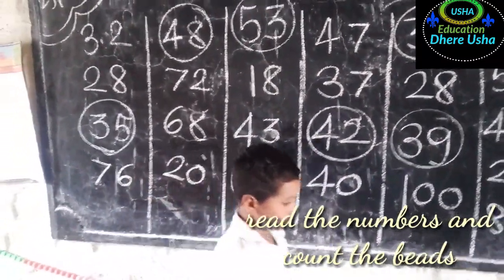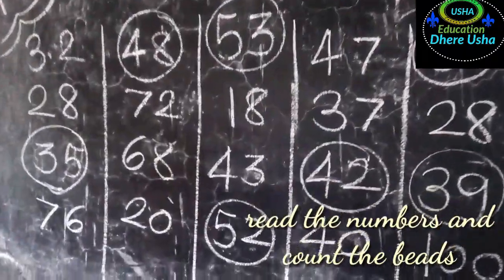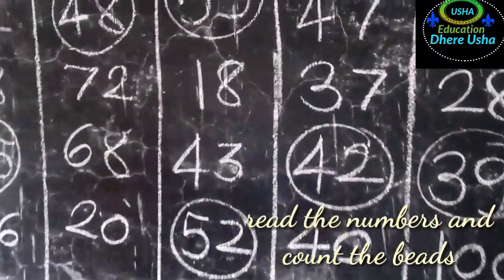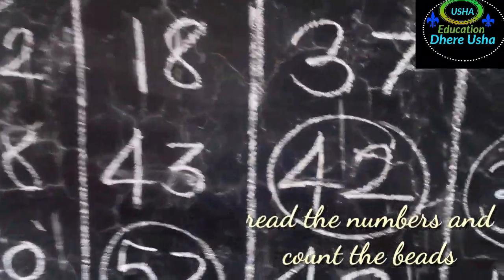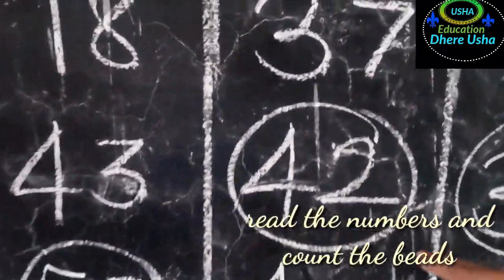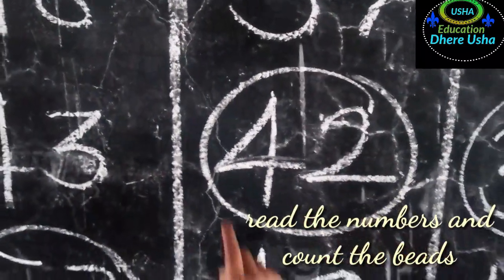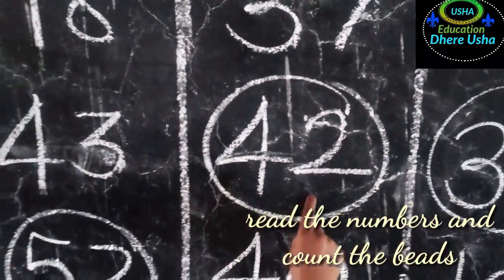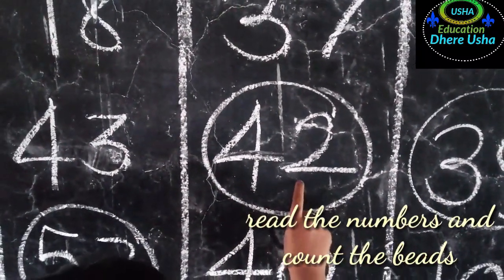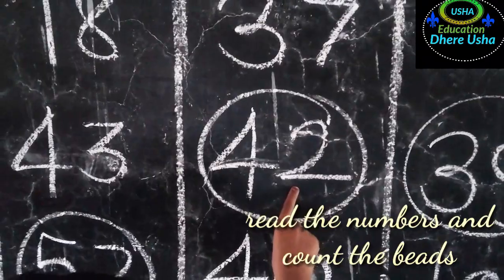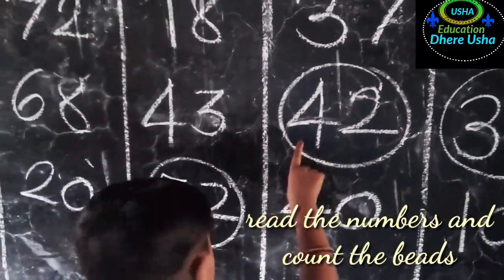Come on, stand up. Read this number. Forty-two. How many units? Two. How many tens? Four. Count the beads.